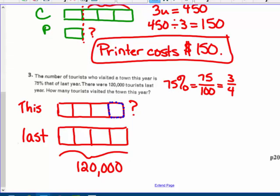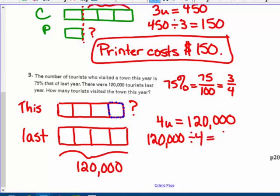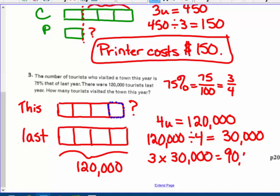So if I take my 120,000 represents four units? If I take that 120,000 and divide it by four, I'm going to get that one of them would be 30,000. And this year, there were three of those units times that 30,000. So that would equal 90,000. How many tourists this year? There were, and I'm going to say bullet, just barely fit it in here. There were 90,000 tourists this year.